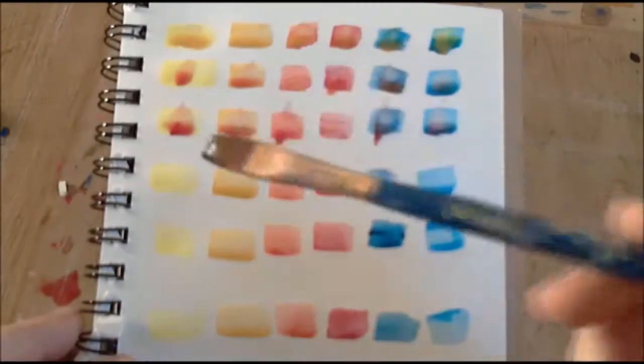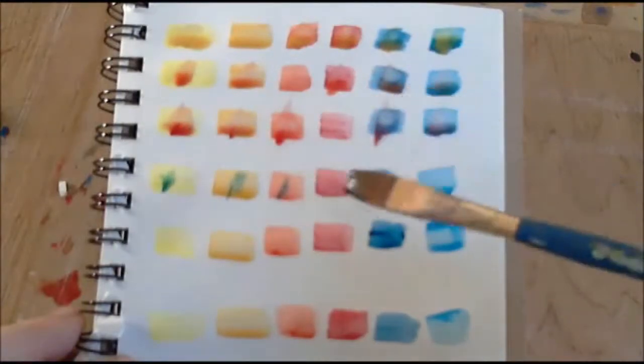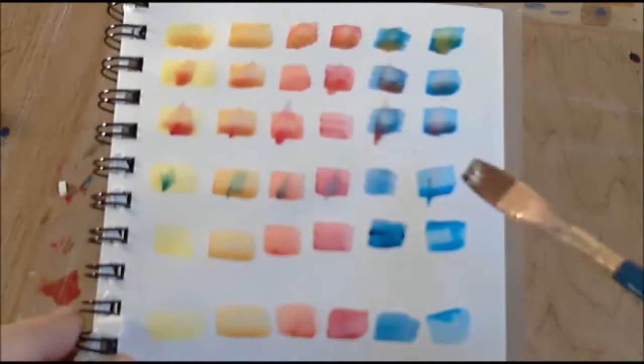Blue has a strong pigmentation, so you will need more water, whereas yellow is weaker in its pigmentation.